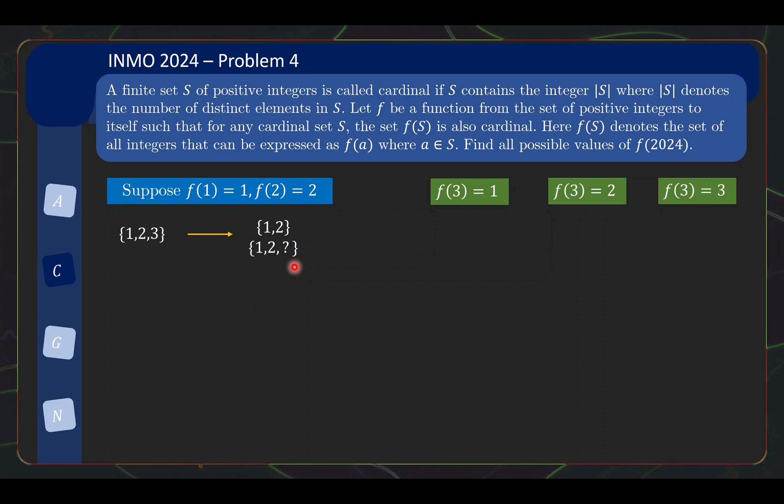But fortunately, we can very quickly rule out one of the scenarios. Specifically, if f(3) equals 2, we can very quickly get a contradiction by seeing that the cardinal set {2, 3} gets mapped to just {2}. So this set obviously is not cardinal, so we get a contradiction. This shows that this will not give you a valid F. So goodbye to that scenario. And now we have 2 other scenarios.